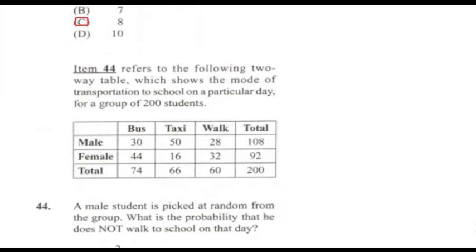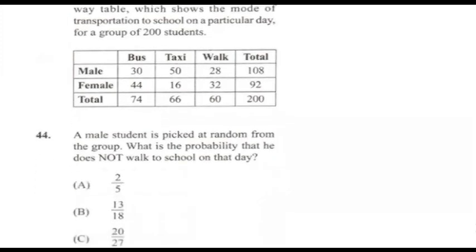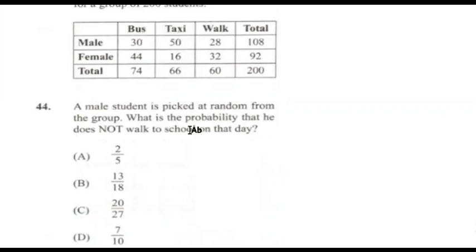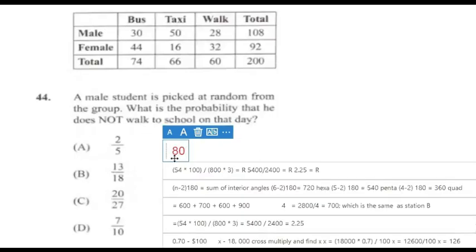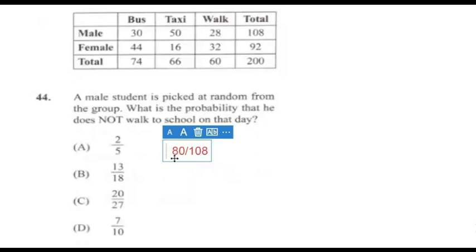Question 44 refers to a two-way table showing the mode of transportation to school for a group of 200 students. A male is picked at random — what is the probability that he does not walk to school? The male is taking either a bus or a taxi, which is 50 plus 30, giving us 80, divided by the total number of males which is 108. Simplifying: 80/108 = 20/27. Answer for 44 is C.